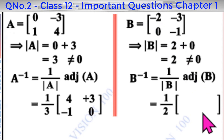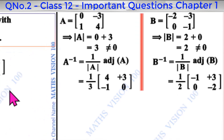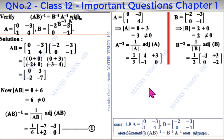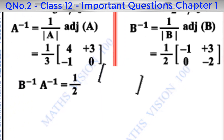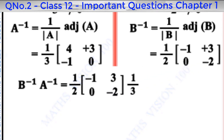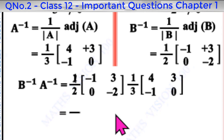For adjoint of B, principal diagonal position elements are swapped and other diagonal sign is changed. We then compute B inverse A inverse by multiplying: 1 by 2 into 1 by 3 equals 1 by 6.